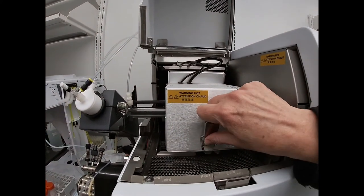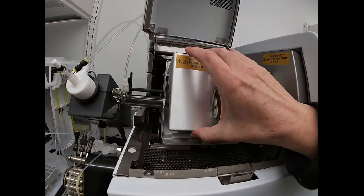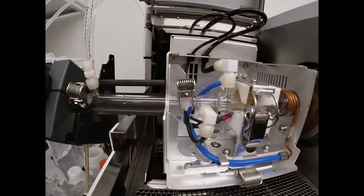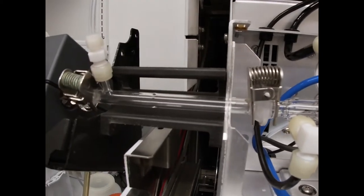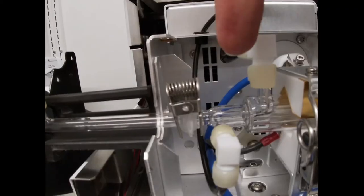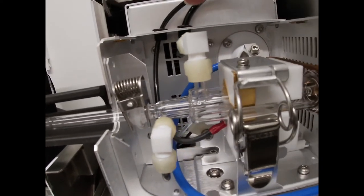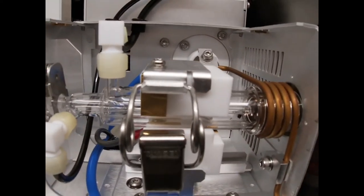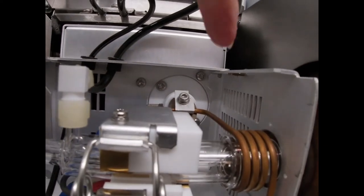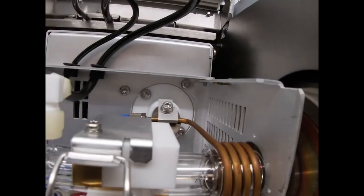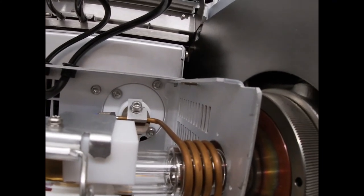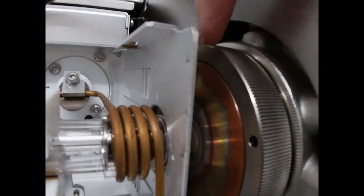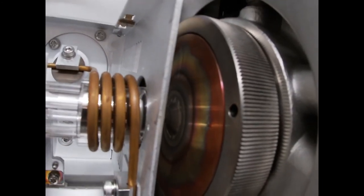So here we have the torch box. This is our ICP torch. So our sample comes up this line right here, actually joins to our torch where we have concentric flows of argon flowing in to maintain our plasma and to cool the torch assembly and prevent it from melting. So the plasma is actually induced here. The plasma is around 4,000 degrees Kelvin. So the sample comes in, hits the plasma, is atomized and ionized, and then it enters the vacuum chamber, the skimmer cone.